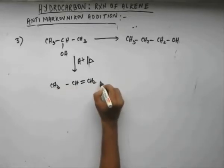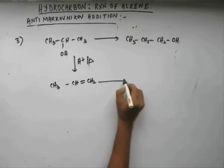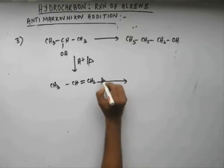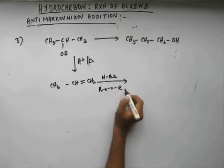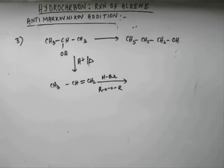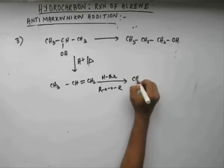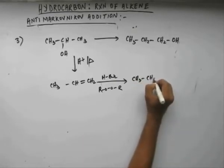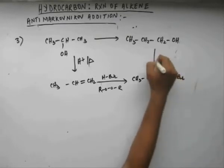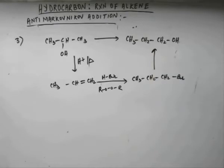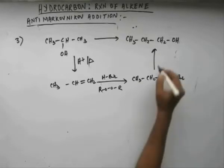When you get propene and carry out addition reaction using peroxide, bromine will be attached to the first position, giving 1-bromopropane. From here, all you have to do is substitute bromine and get a hydroxide group, which can be done by a simple substitution reaction.